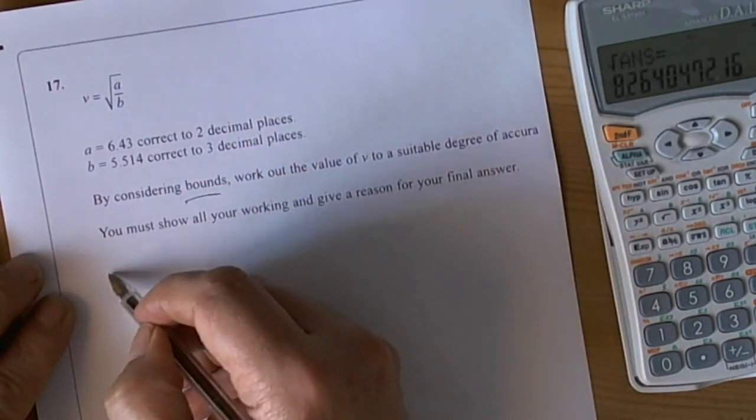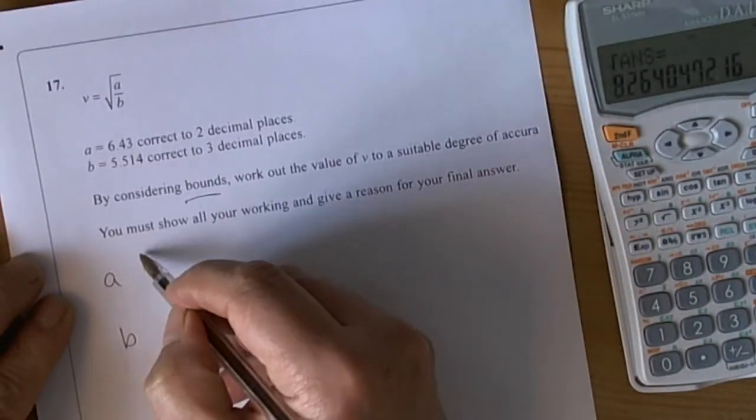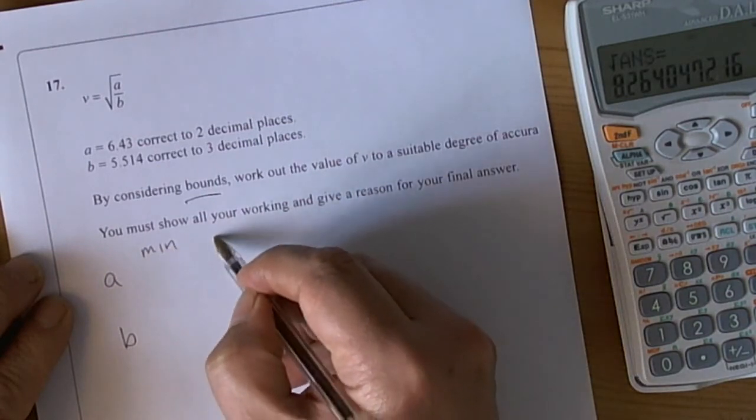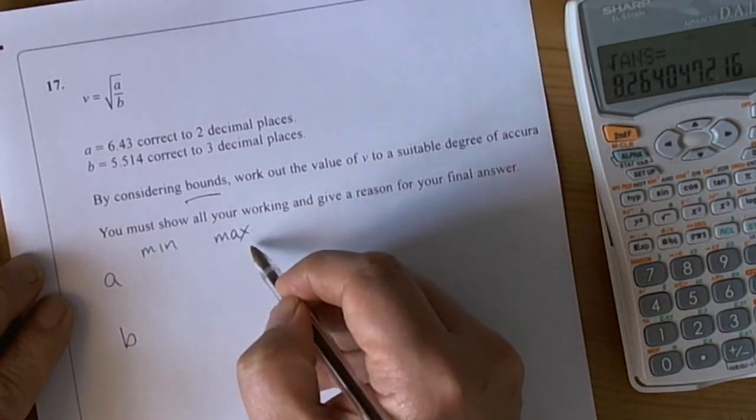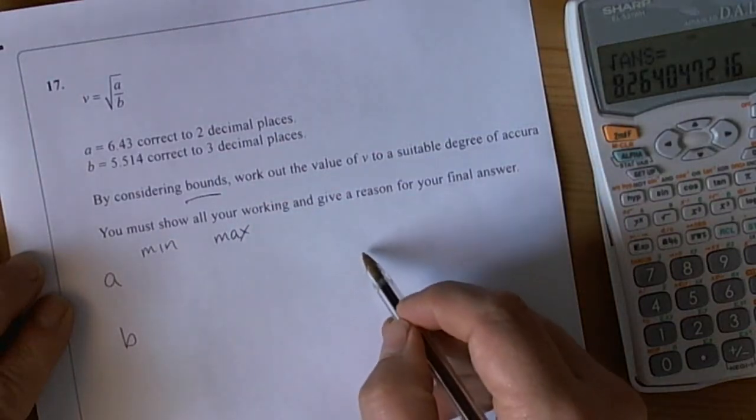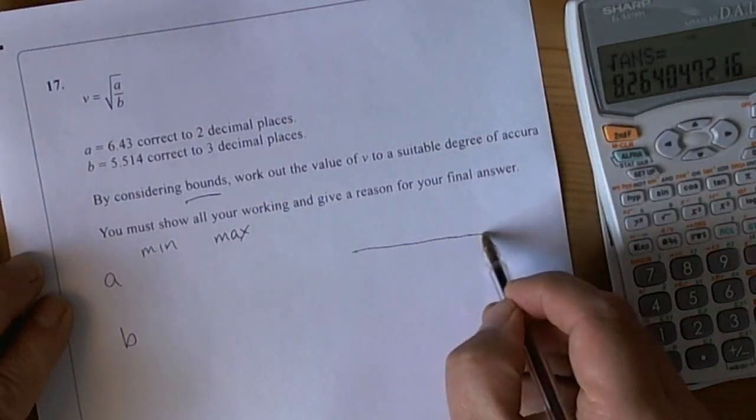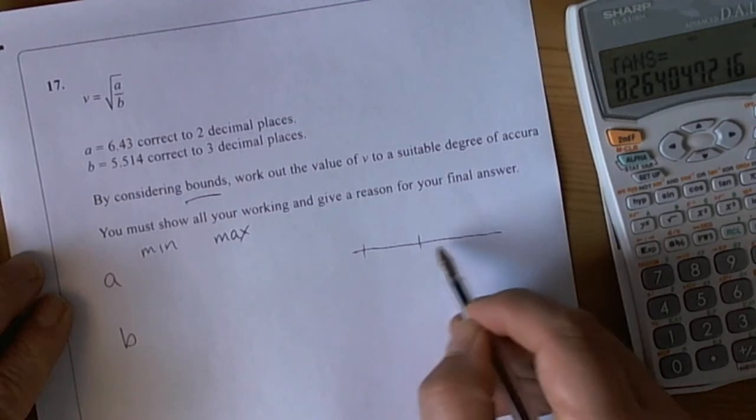So the first thing to get some method marks is to write down the minimum values possible and the maximum values possible. Now because the 6.43 has been given to two decimal places, that really means you're working with a measuring scale for A.